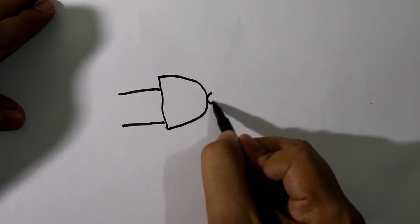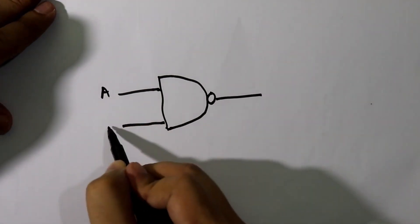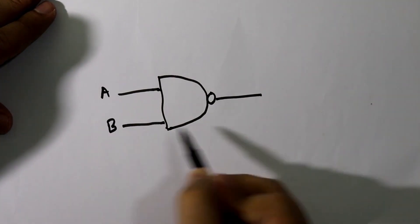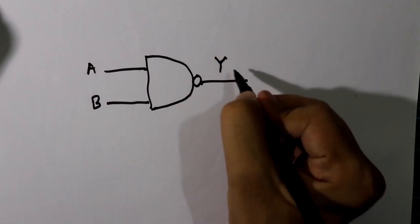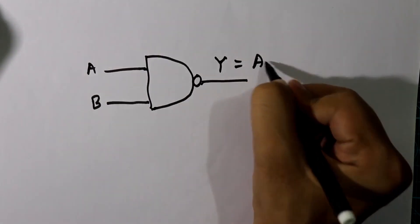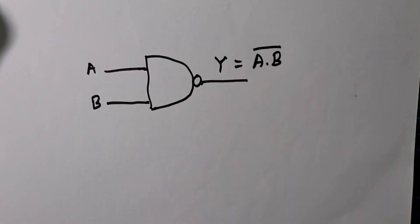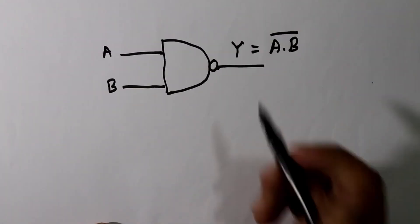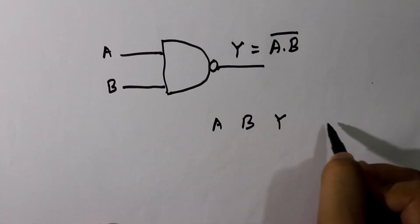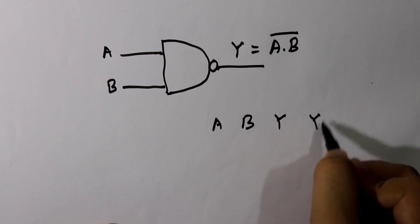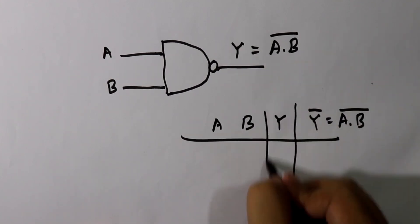If we add one NOT gate to an AND gate, it becomes a NAND gate. Input A, input B, and the output of the NAND gate will be A dot B and then its complement. The truth table of the NAND gate has columns A, B, the AND output Y, and the final complemented output.